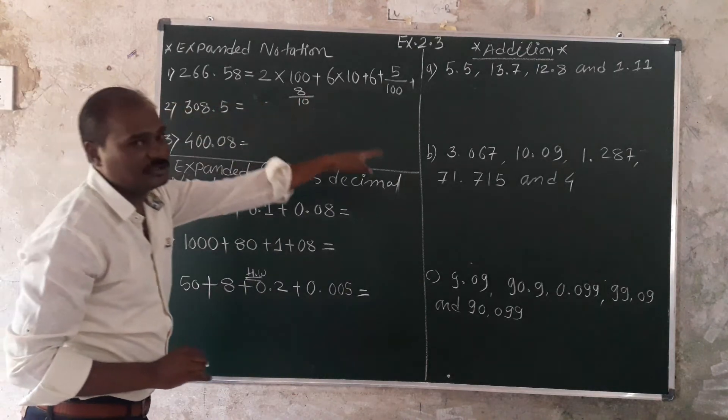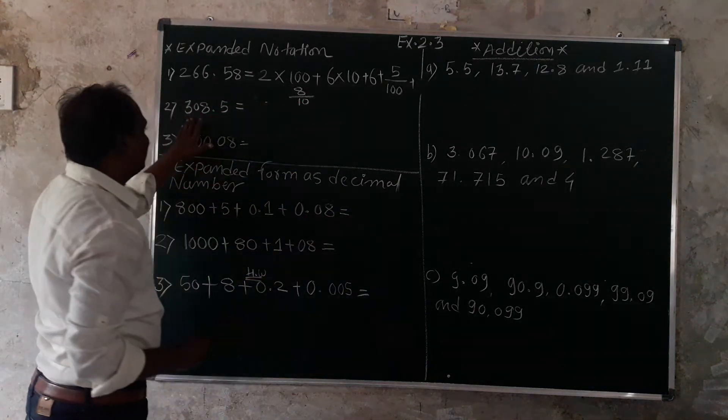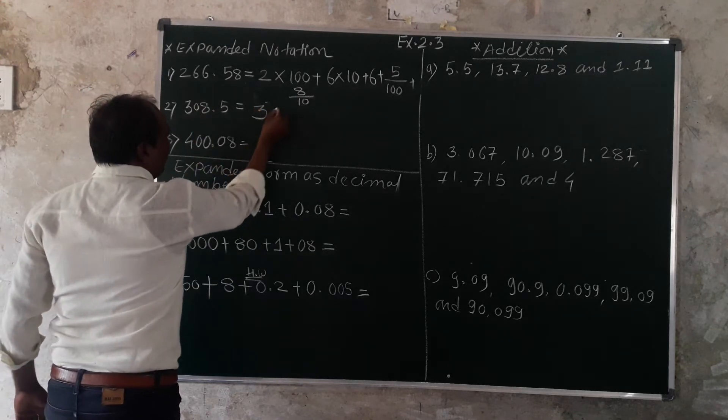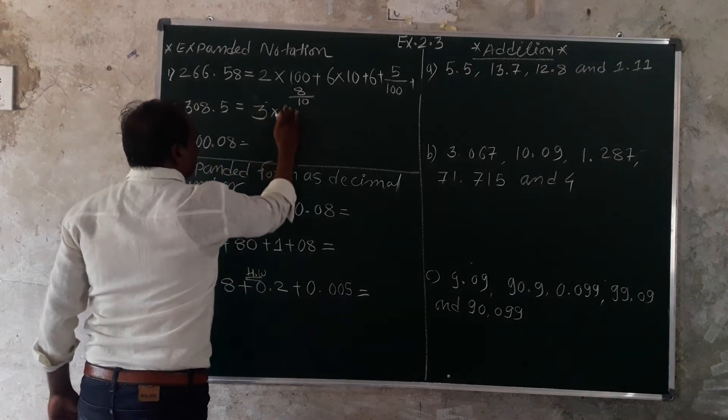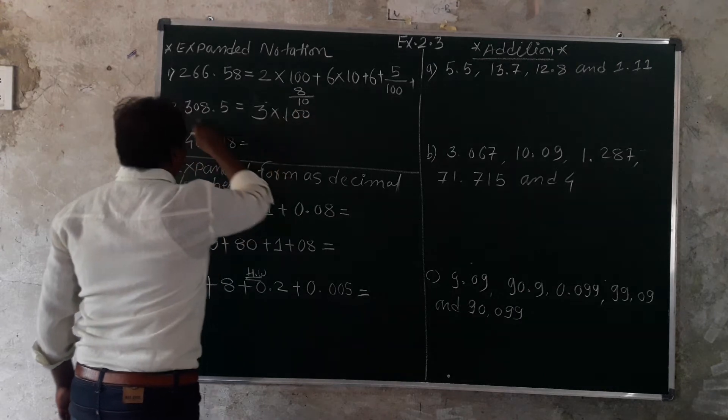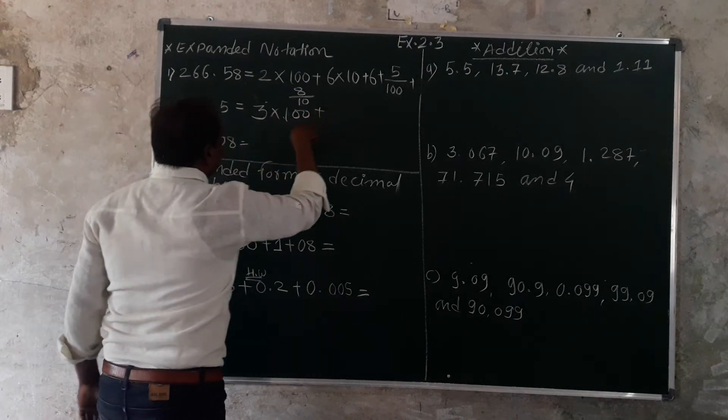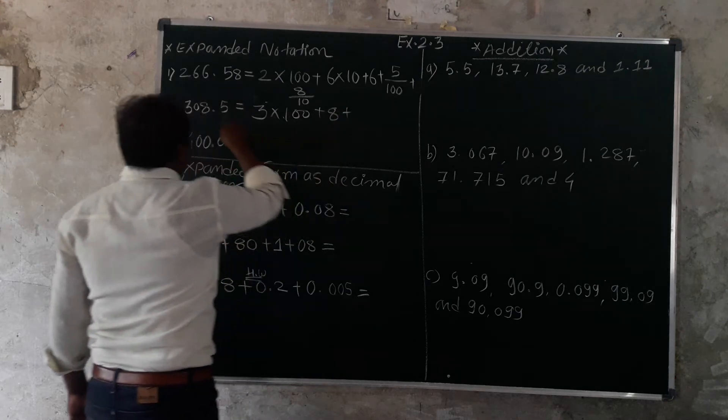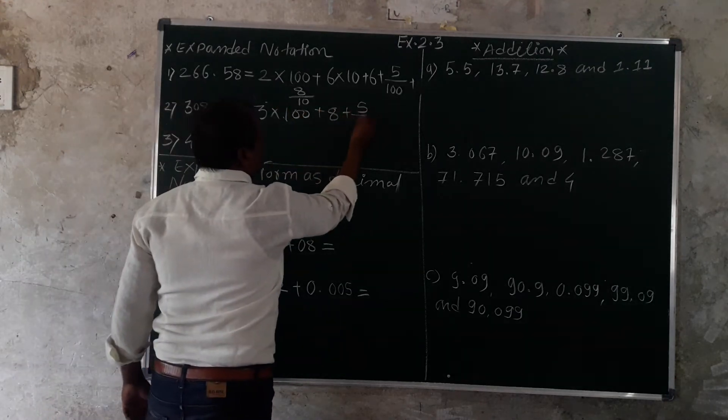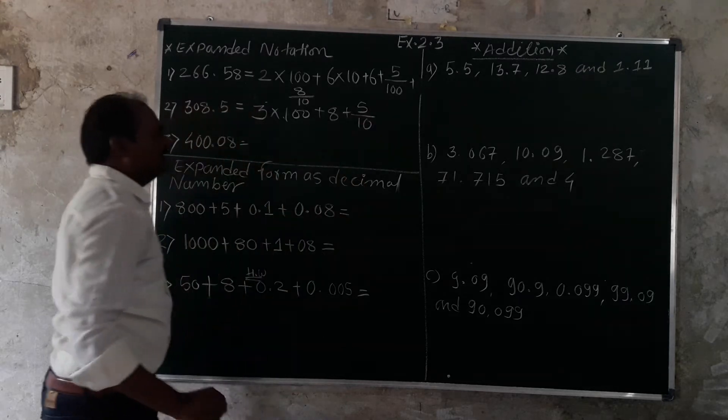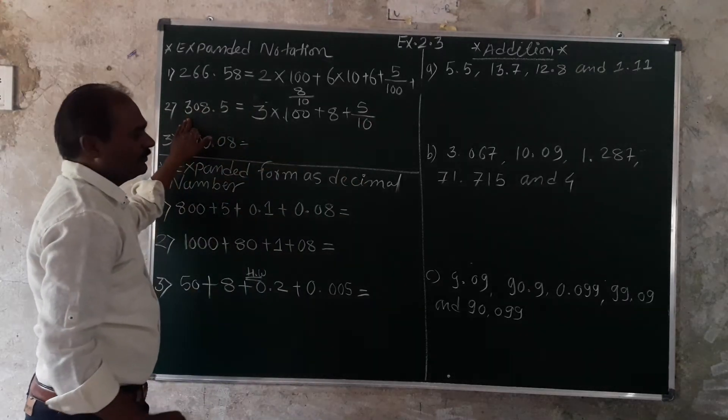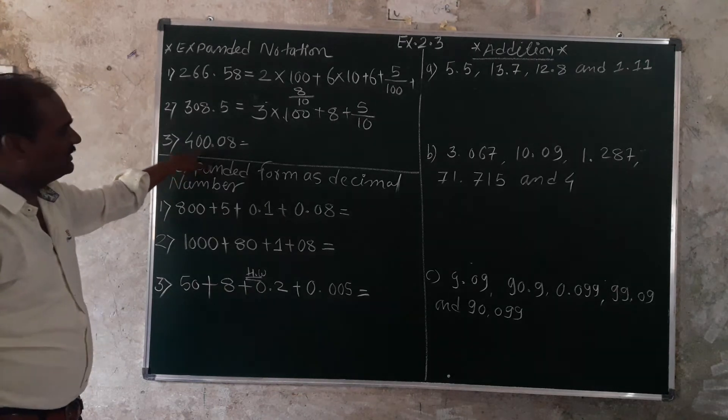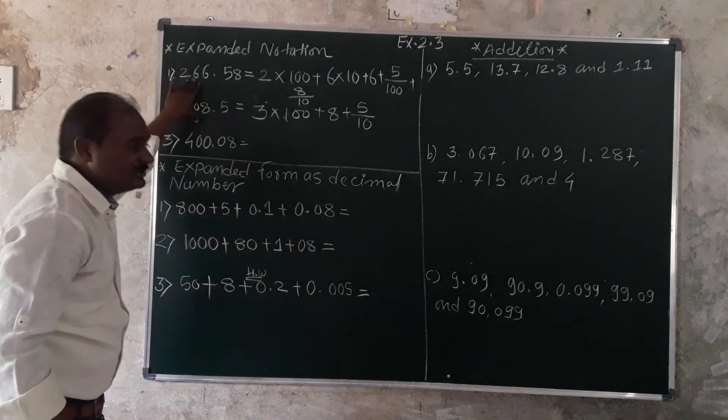Second question: 308.5. This is 3 multiplied by 100 plus 0 times 10 plus 8 times 1 plus 5 over 10. This is the expanded notation of this question. Practice 1, practice 2.